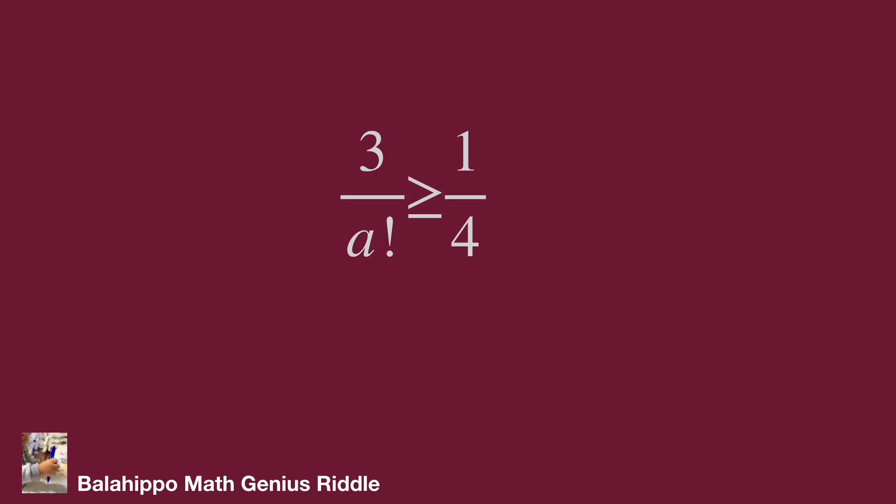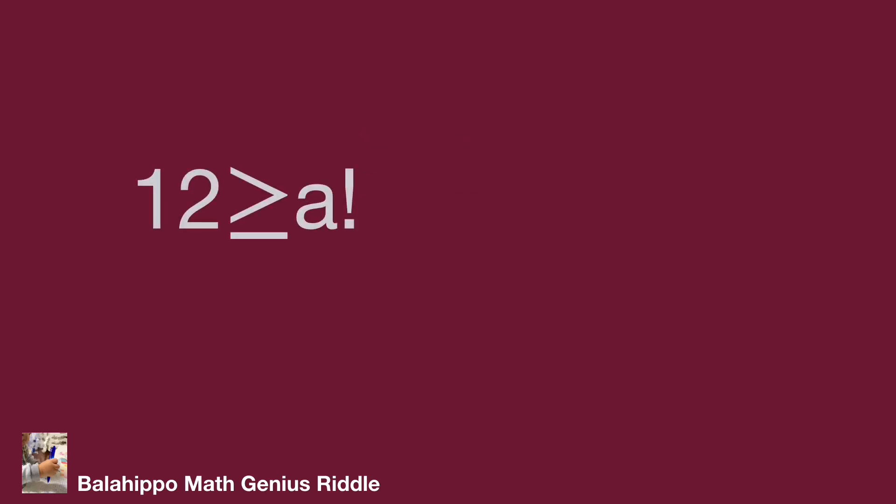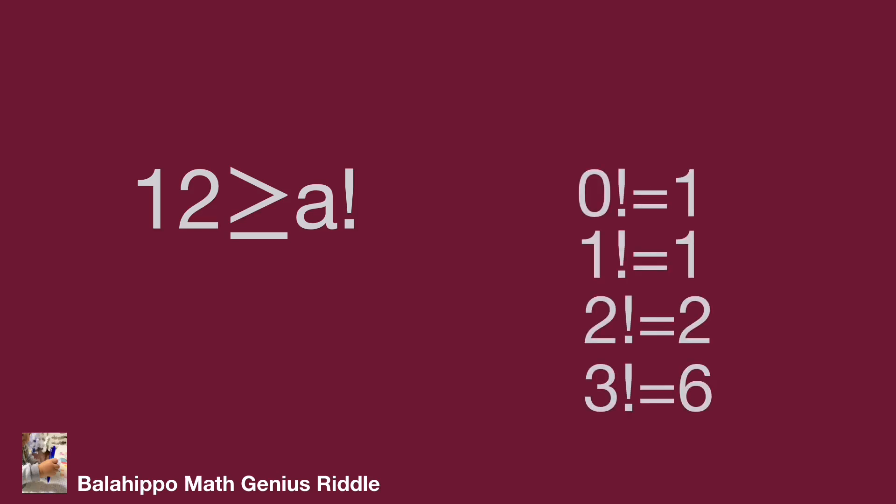Cross multiplying these two fractions gives 12 ≥ A factorial. We know the factorial values: 0 factorial equals 1, 1 factorial equals 1, 2 factorial equals 2, and 3 factorial equals 6. All of these fulfill the condition that A factorial ≤ 12.